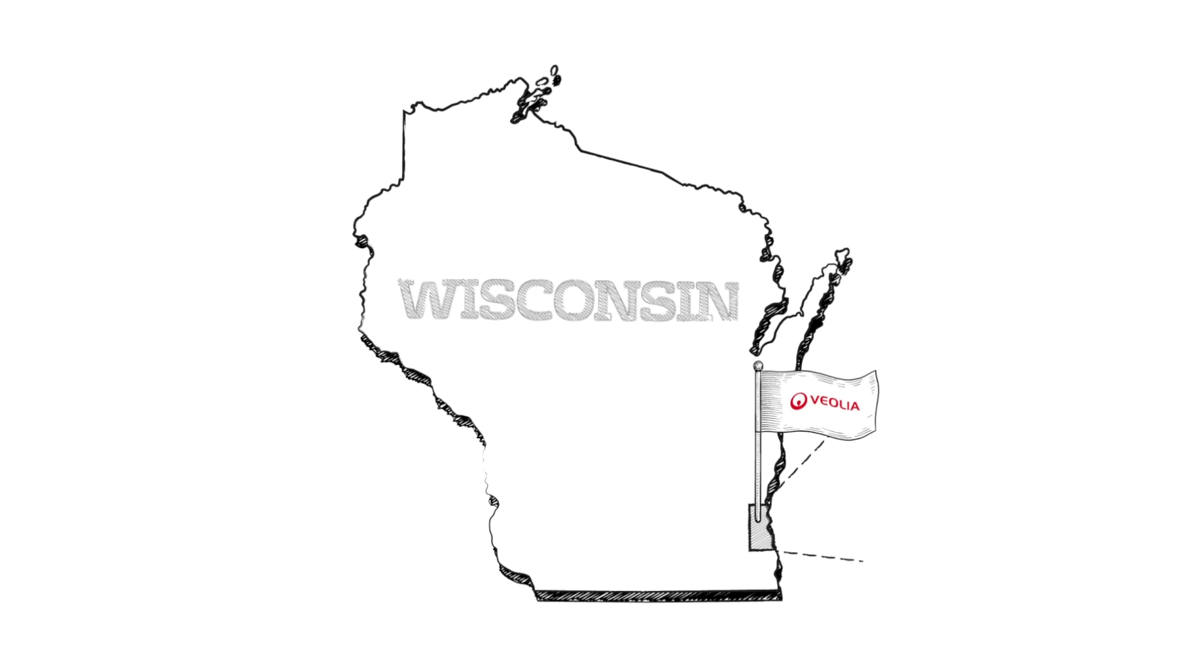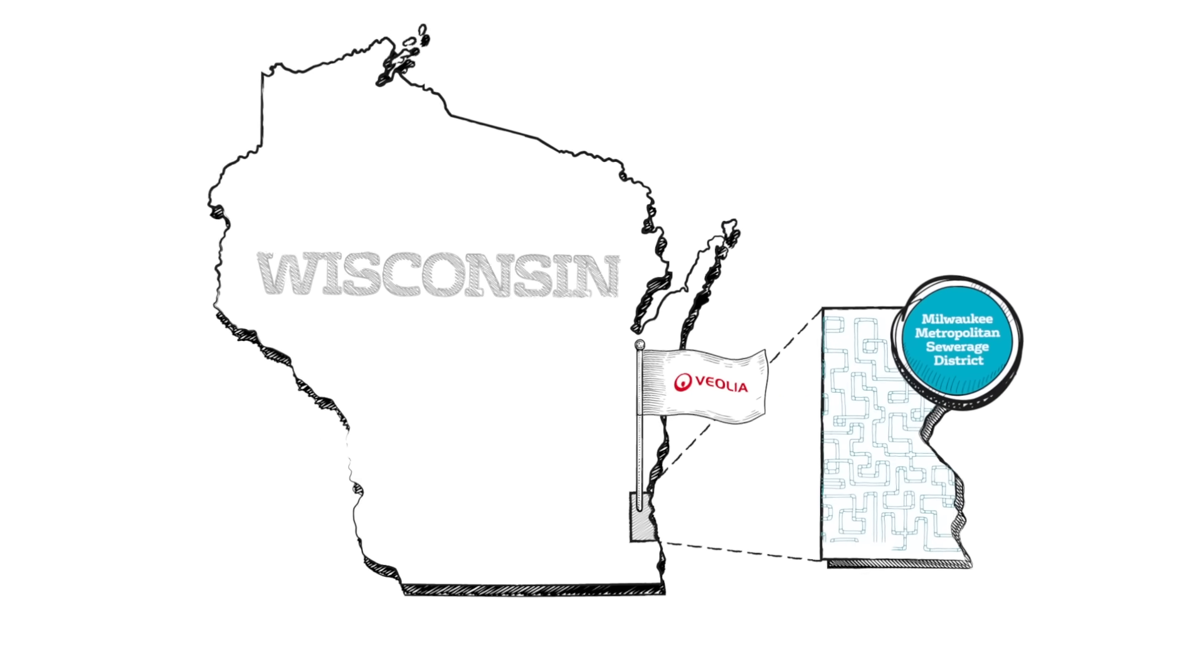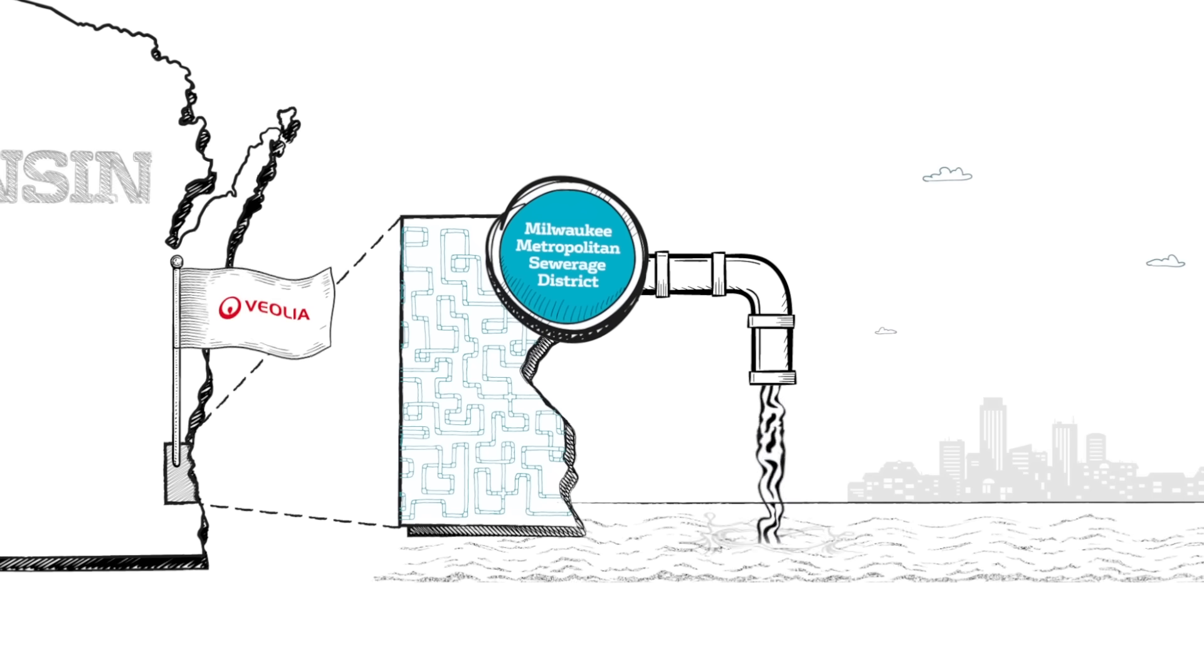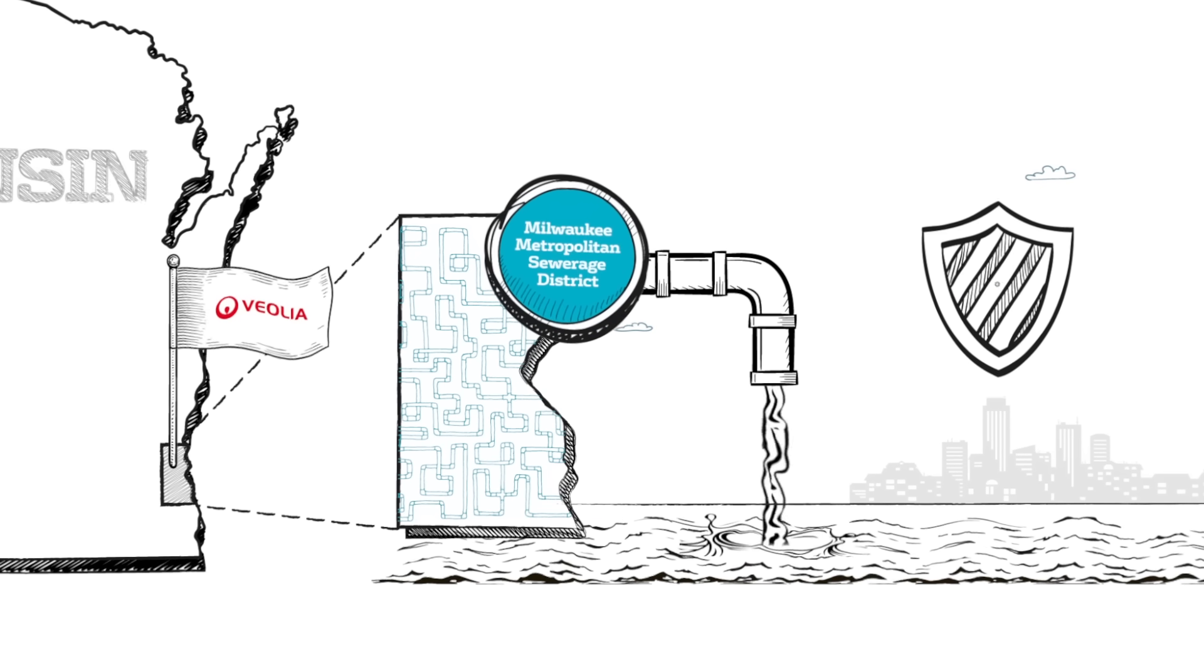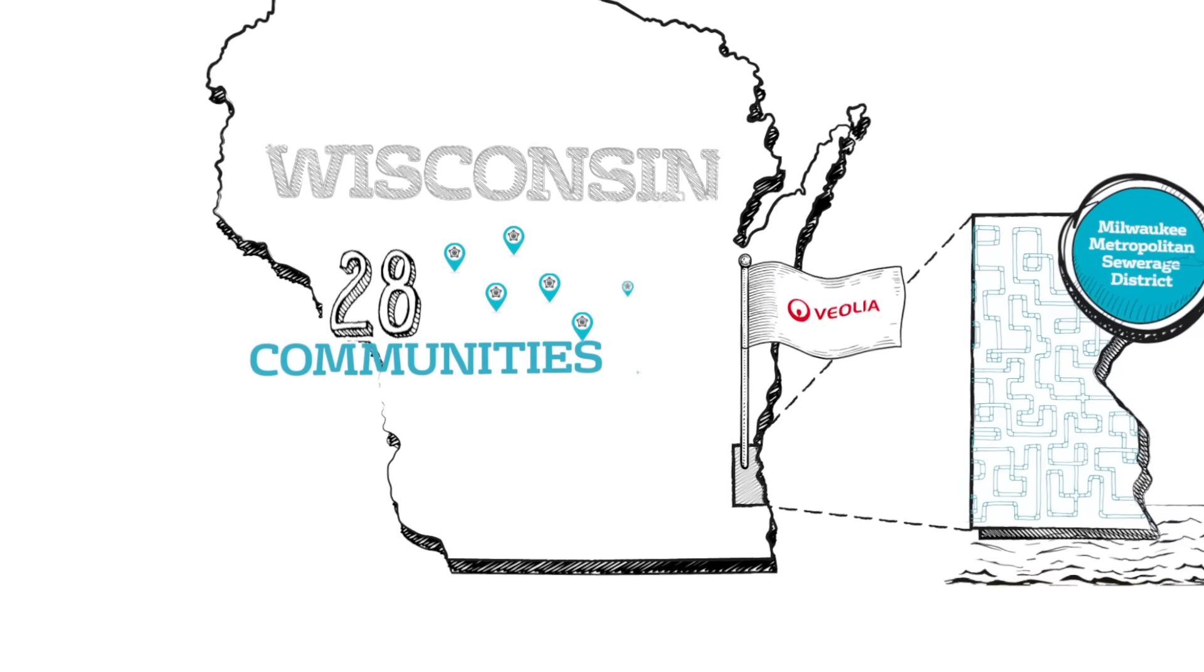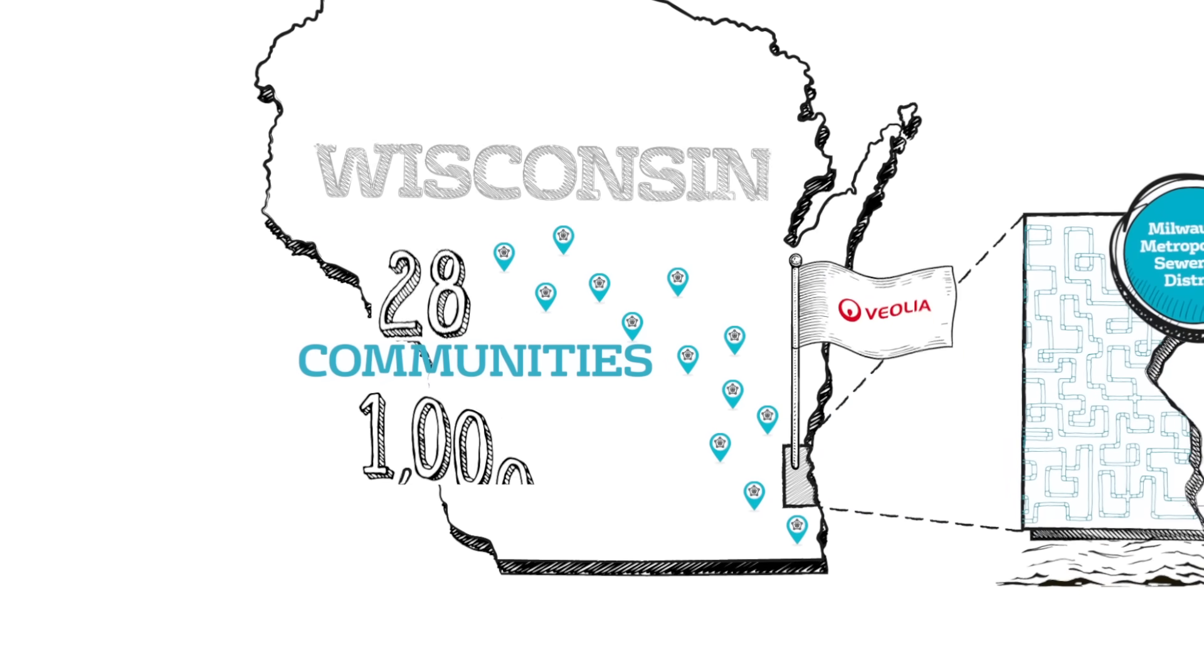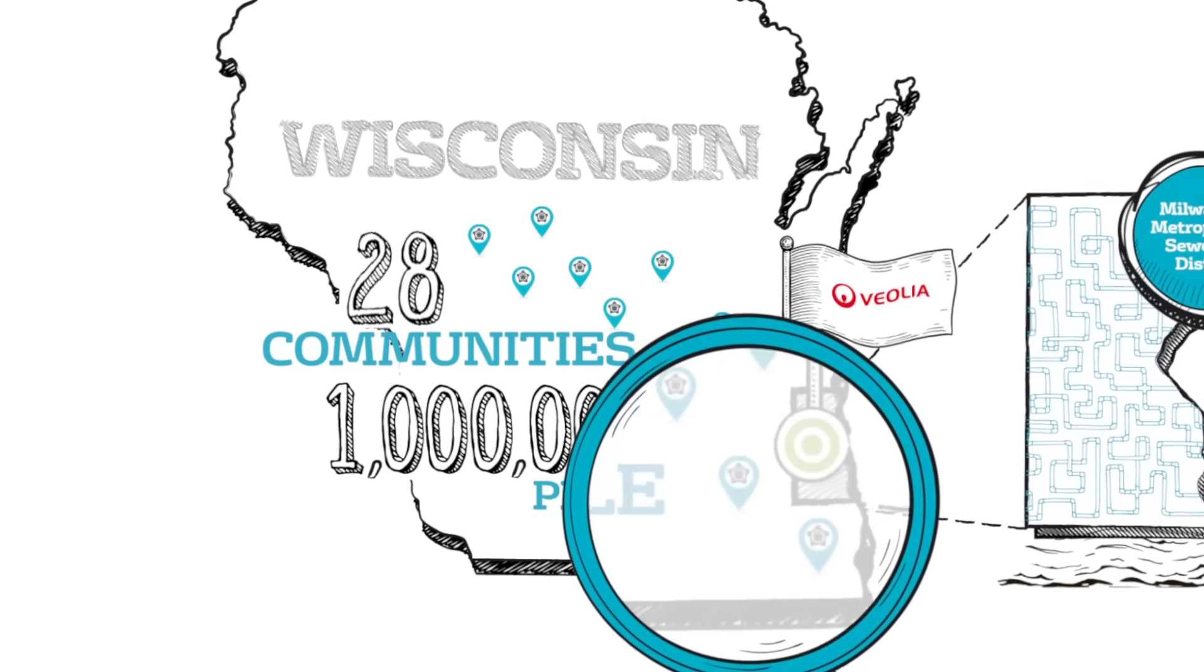Veolia Water Milwaukee, contracted by the Milwaukee Metropolitan Sewerage District, cleans billions of gallons of wastewater every year, safeguarding natural resources and protecting public health for 28 communities and over one million people in southeastern Wisconsin.